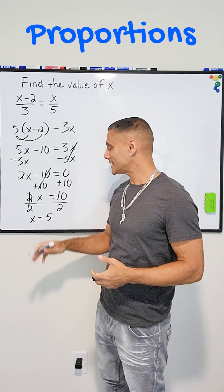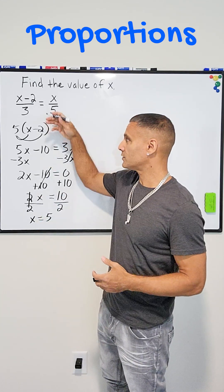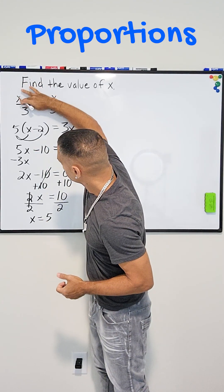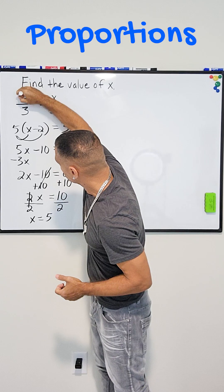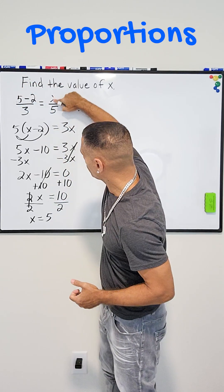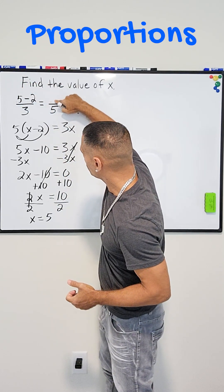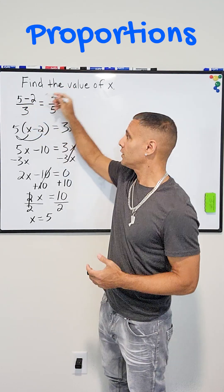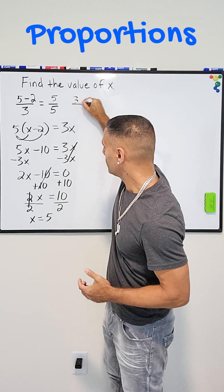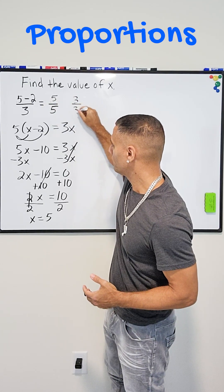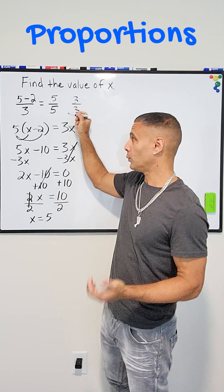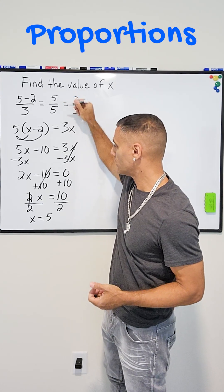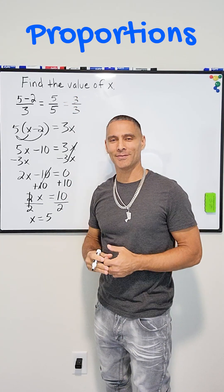Now to check our answer, we're going to take 5 and plug it back into the original proportion. So if we take this x and write a 5 there and do the same with this x over here, we should get the same thing on both sides. So over here we have 5 minus 2, which of course is 3, and the denominator is 3, and 3 over 3 of course is equal to 1, and 5 over 5 is also equal to 1 whole, so we just proved that the value of x is in fact equal to 5.